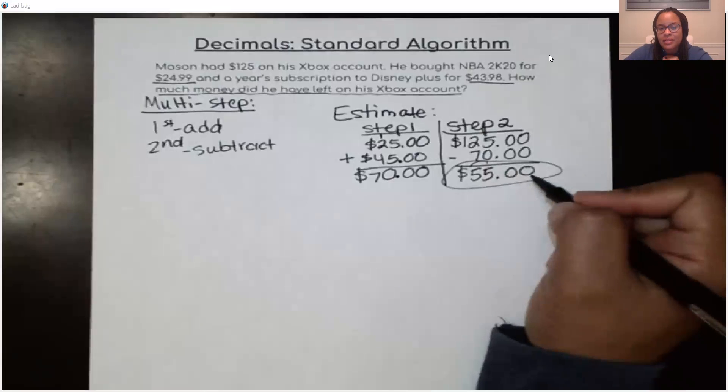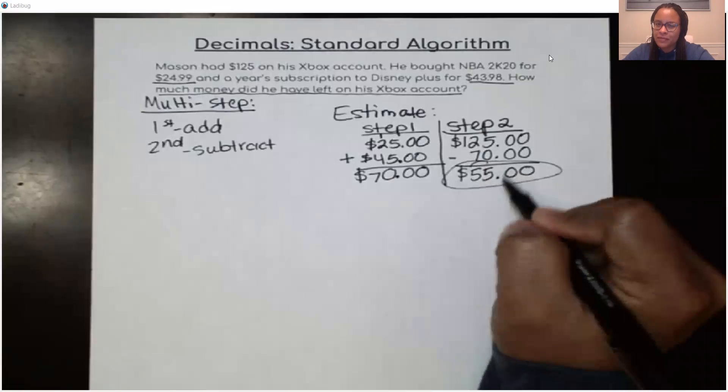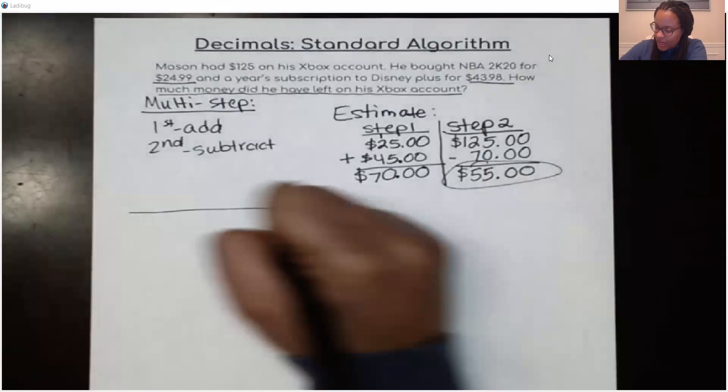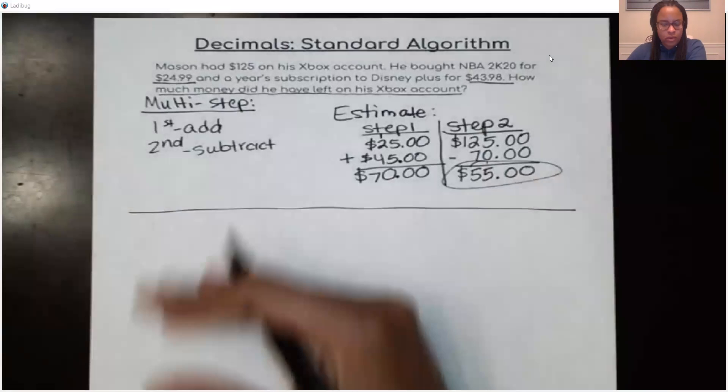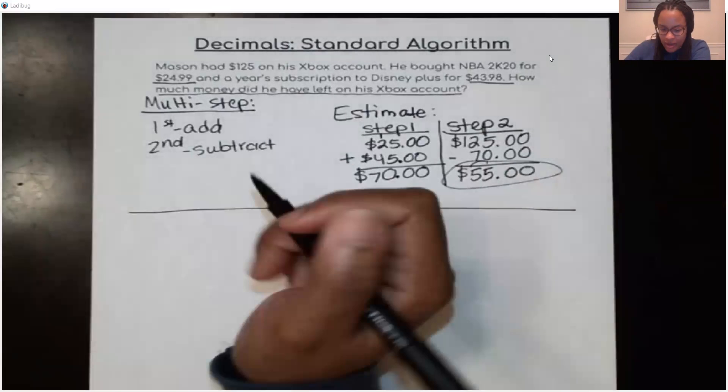I'm making an estimate first so that I can have a reasonable answer. If my answer comes out to be $12 or $550, then I know I'm off. There's somewhere where I made a mistake because I should be around $55. All right. So let's get started. We're going to actually do the actual subtraction and adding decimals with the actual numbers that we have.